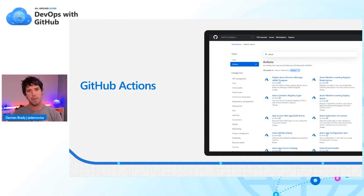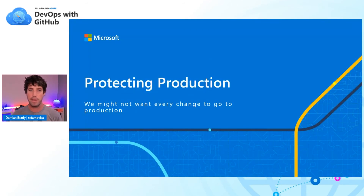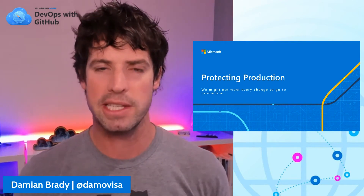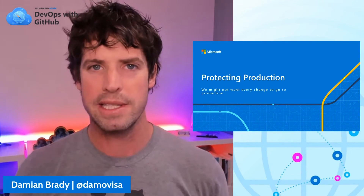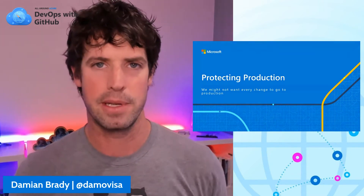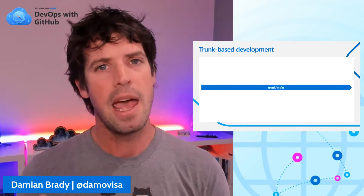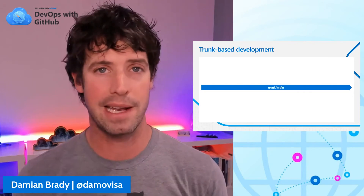We want to build our application and deploy it to Azure, but we might not want to deploy every single change. It's important that we protect production — and this is what gets people over the hump of thinking they don't want to put everything into production. If we can protect that production environment and only promote our code when we want to, that's a really great way of handling things. So not every change goes to production.